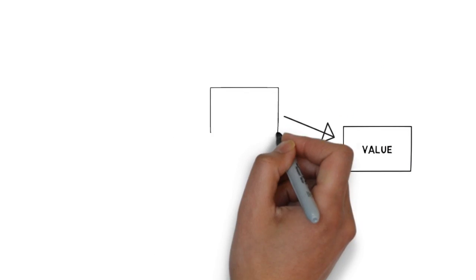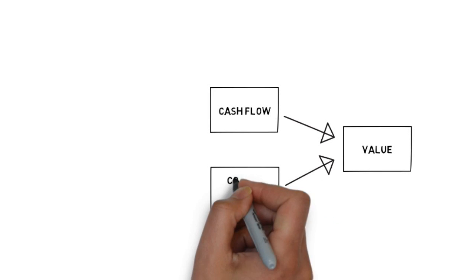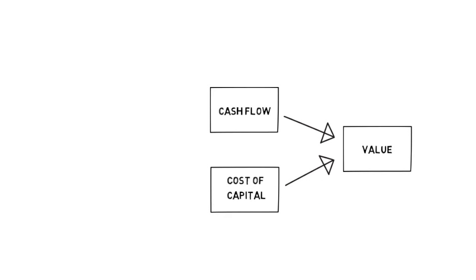Here's a very simple diagram taken from the McKinsey book on valuation, one of the best reference texts available on DCF valuation. We calculate value by discounting future cash flows of a company at the cost of capital. The cost of capital reflects the fact that tomorrow's cash flows are worth less than today's, because of the time value of money and also because of the riskiness of those future cash flows.